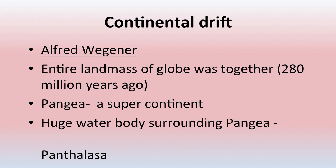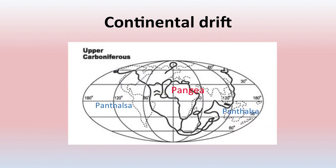Next we will be discussing about continental drift. This theory was propounded by Alfred Wegener. According to this theory, the entire landmass of the globe was together around 280 million years ago and gradually drifted apart horizontally. There was a supercontinent known as Pangea around 280 million years ago, surrounded by a huge water body. As you can see in the picture, all the landmasses are combined together to form Pangea.